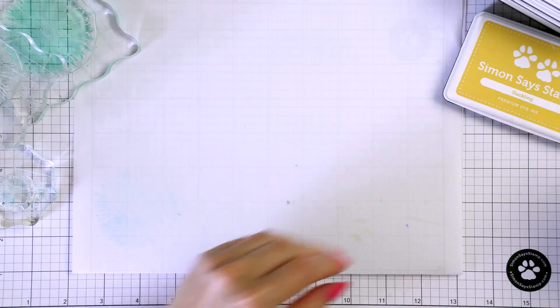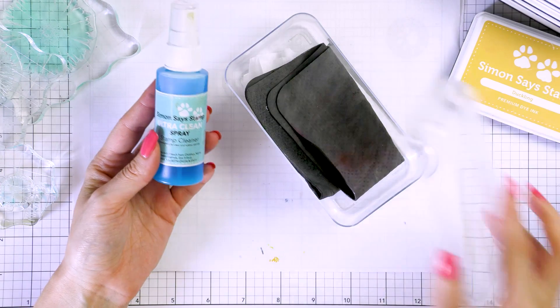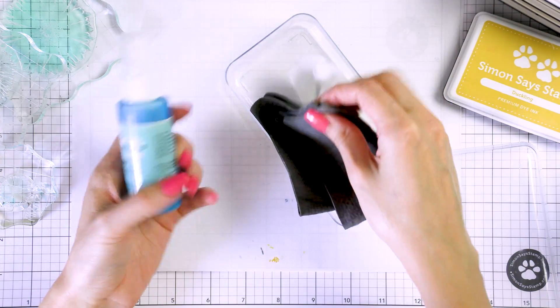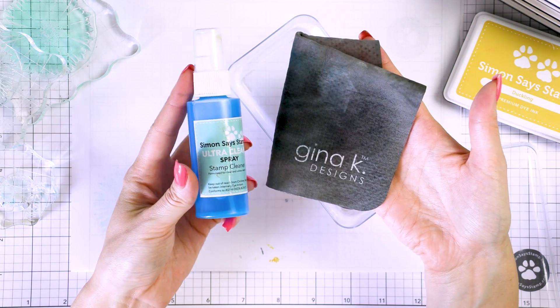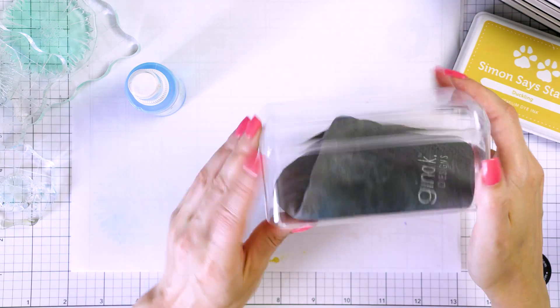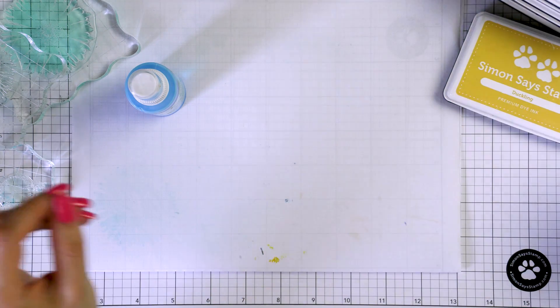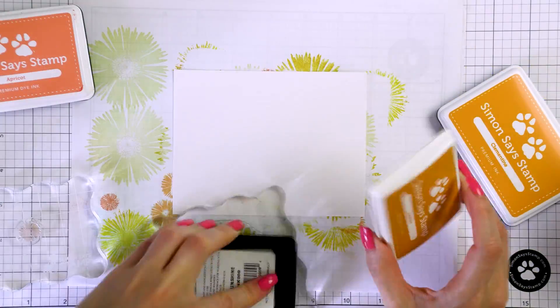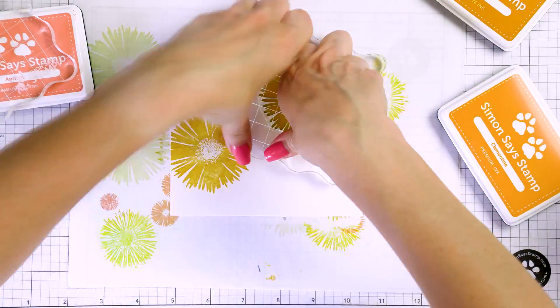Before I start stamping with these colors I need to clean my stamps to remove the blue ink. I like to use my Simon Says Stamp Ultra Clean cleaning solution and my Gina K stamp chamois. I spray the chamois with the ultra clean solution and then I just rub my stamps clean. I keep my chamois in an old airtight plastic candy container to keep it moist.